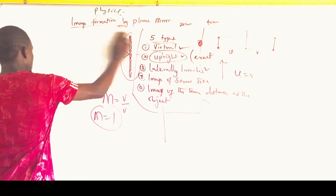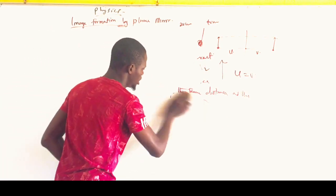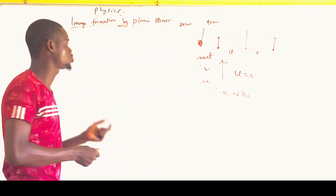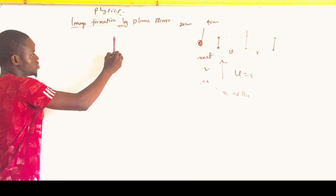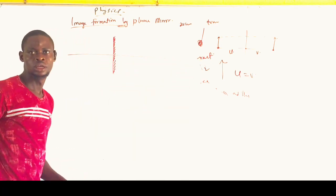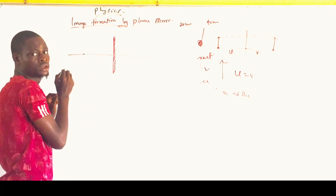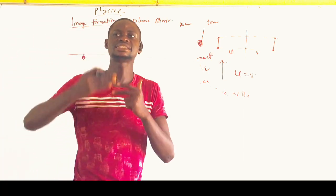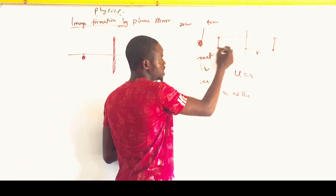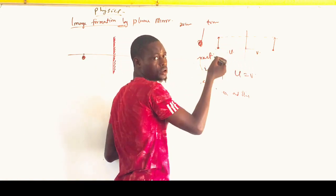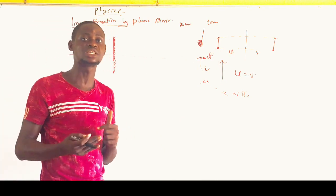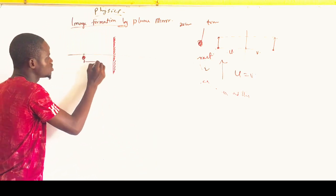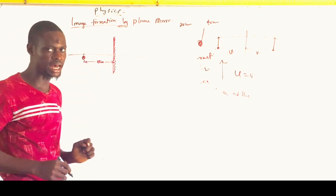Question 2: An object is placed 8 cm in front of a plane mirror. Let me draw this out. I have a plane mirror with its axis. The object is placed 8 cm in front of the plane mirror — that means the object distance U is 8 cm. That is the distance between the object and the mirror.